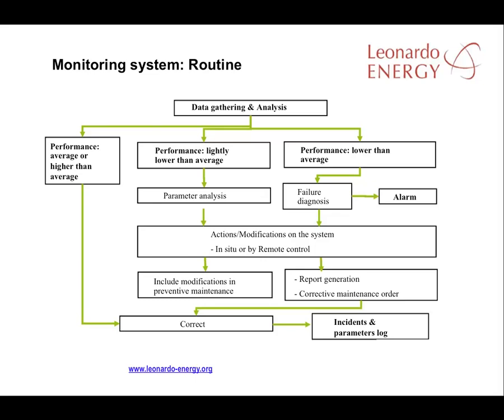If performance is lower than average, a malfunction may be occurring. Normally, underperformance will prompt a monitoring system alarm so that changes can be made urgently. Every time there is an incident, a report must be generated so that checks will be added to the corrective maintenance processes. It is important to have an incidence and parameters log that can be checked when further incidents occur.